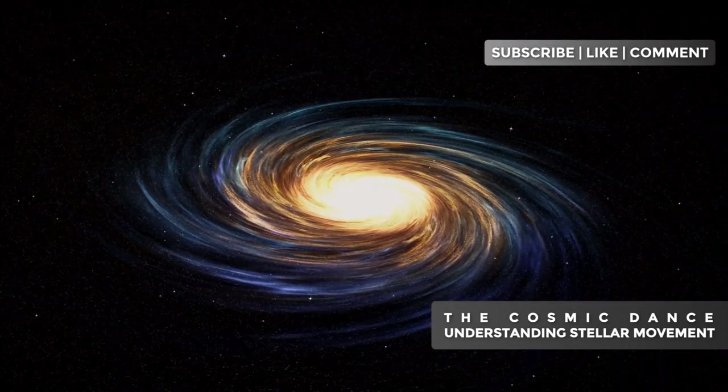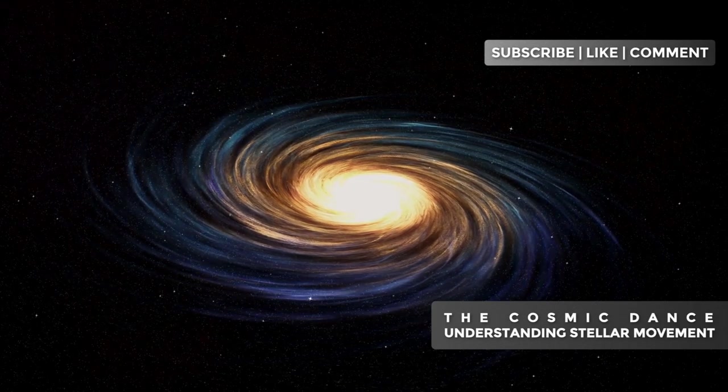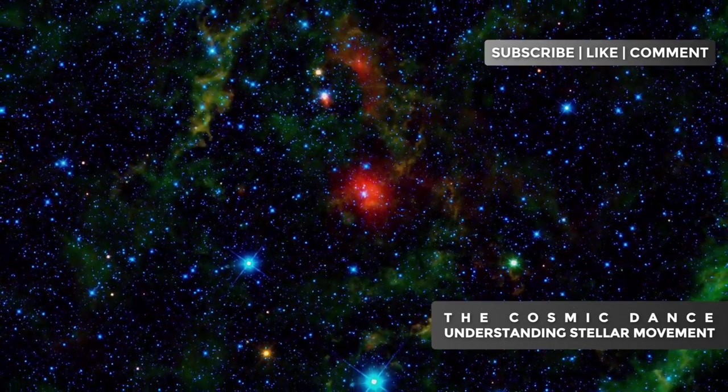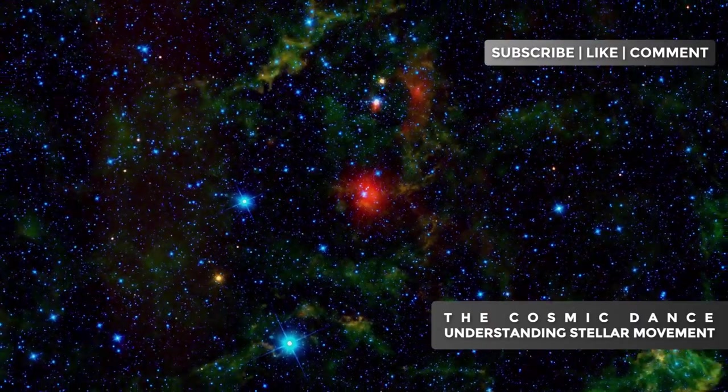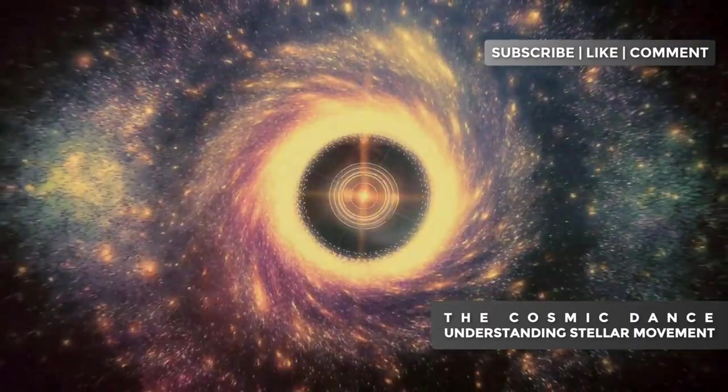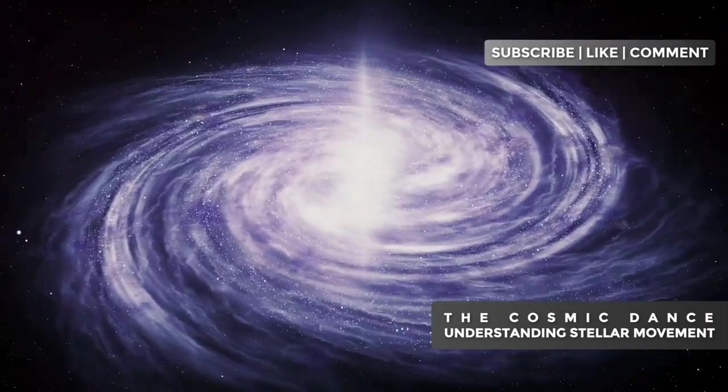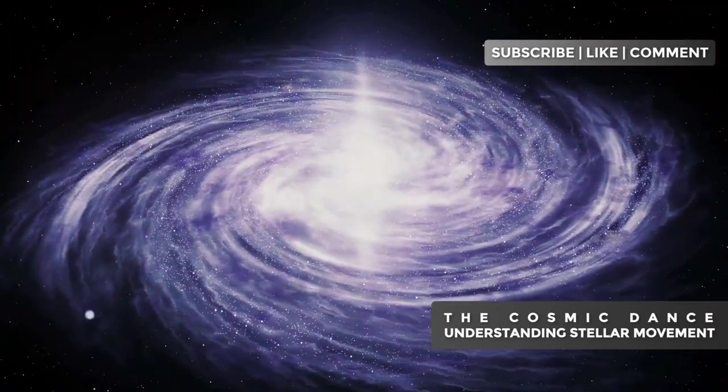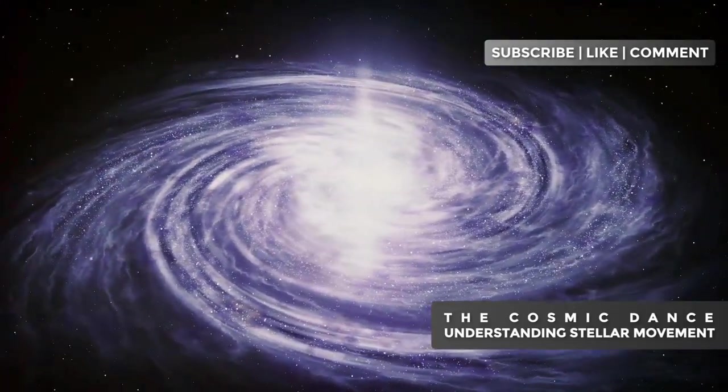When stars pass through a spiral arm, they are temporarily slowed down by the additional gravity. This creates a cosmic traffic jam effect, where stars cluster together, forming the bright regions we see as spiral arms. After passing through the arm, stars accelerate again. This continuous process maintains the spiral structure of the galaxy, even though individual stars do not remain in the arms.